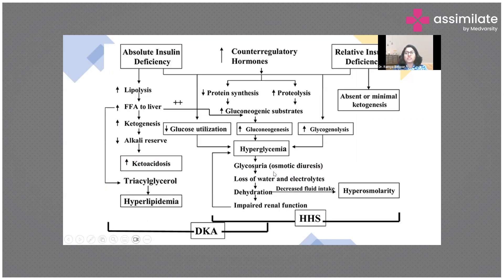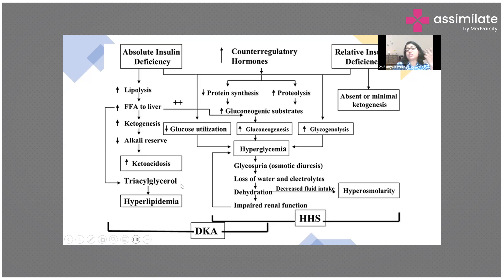The pathogenesis involves absolute insulin deficiency as in DKA, or relative insulin deficiency as in HHS. In absolute deficiency, lipolysis occurs, resulting in ketogenesis and ketoacidosis, and also hyperlipidemia. Because of lower glucose utilization, there is increased gluconeogenesis and glycogenesis, resulting in higher blood sugar. This causes glycosuria and osmotic diuresis, leading to significant fluid loss and severe dehydration, which is especially prominent in HHS, along with electrolyte loss and potentially impaired renal function.